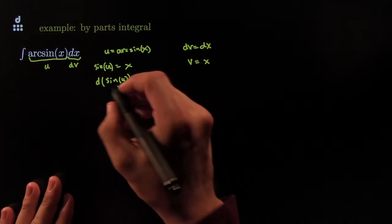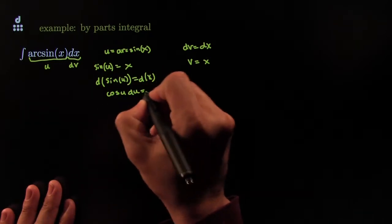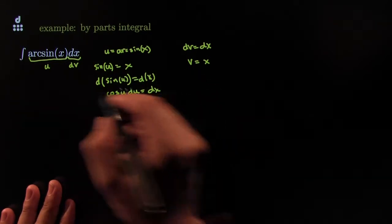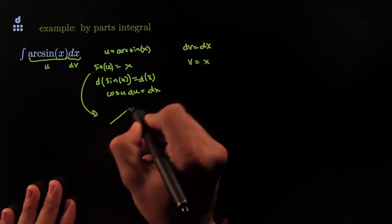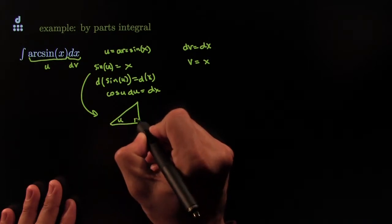Just slap the d on both sides. This becomes cosine of u, differential of u is equal to dx. And, of course,